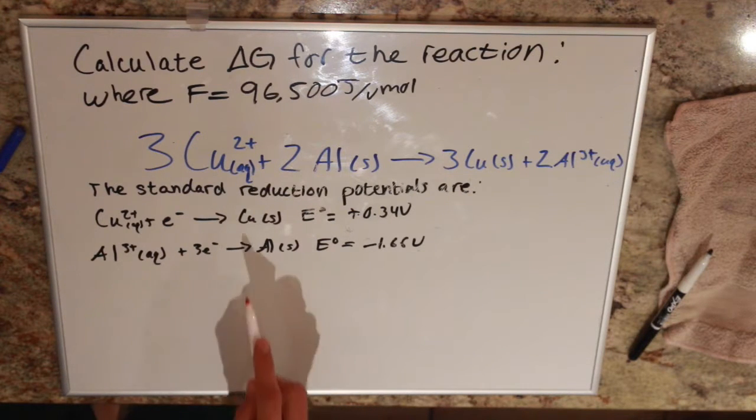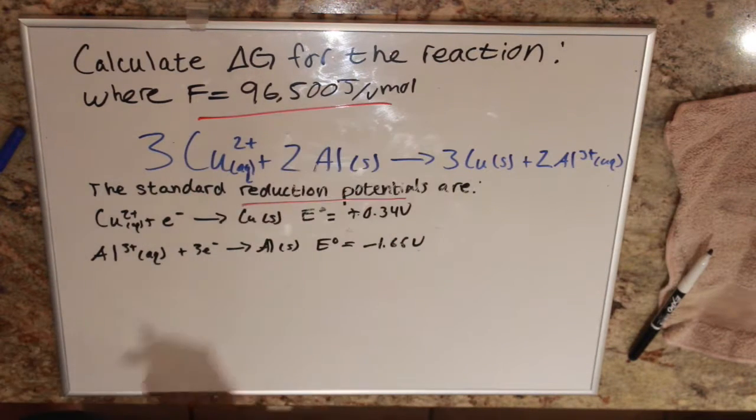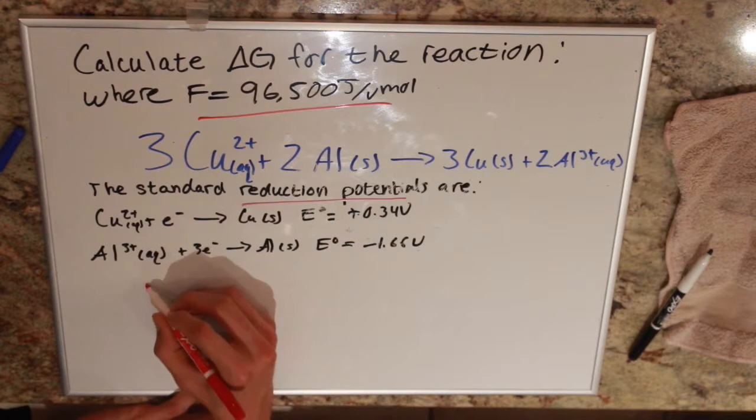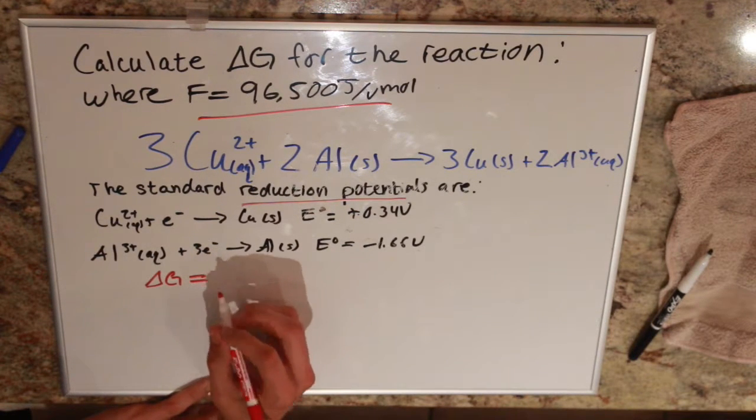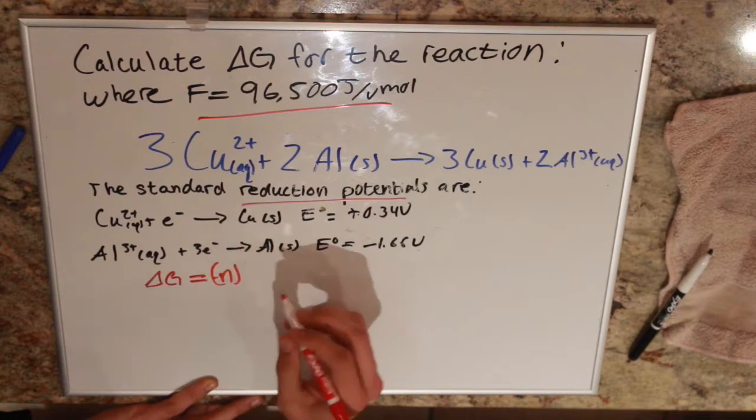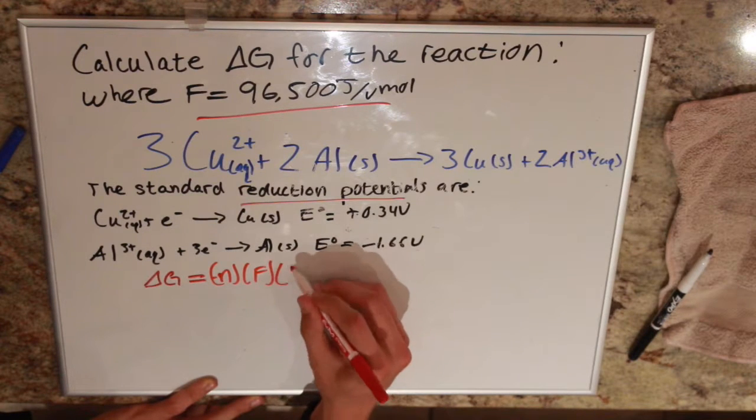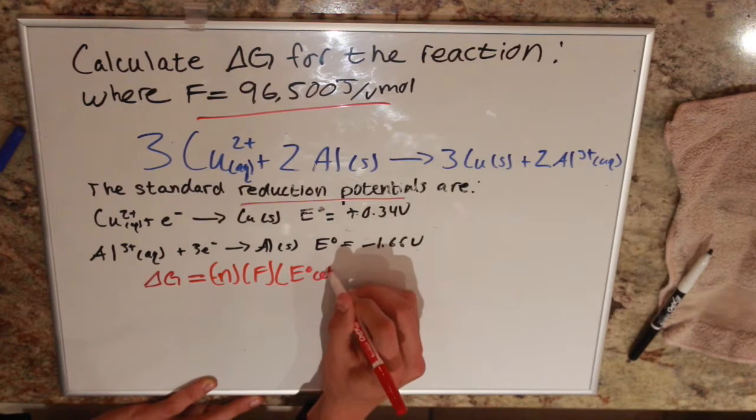It gives us our standard reduction potentials and our Faraday's constant, and we're left to calculate delta G. So the equation we have to use for this one is delta G equals the number of electrons times Faraday's constant times our cell potential.